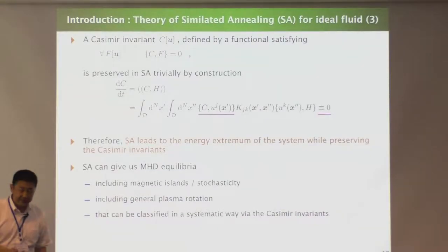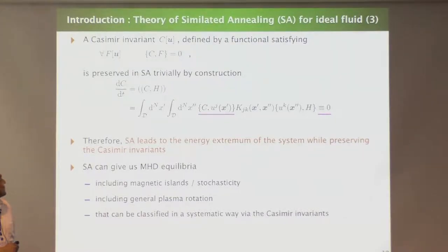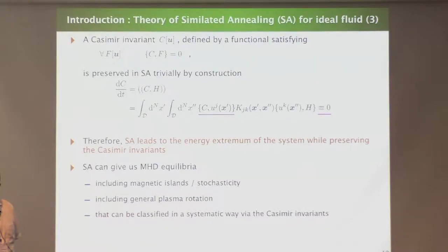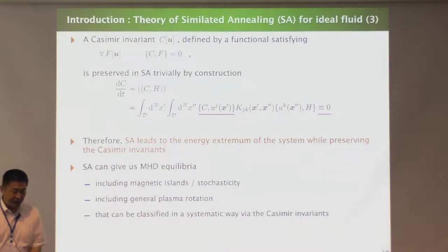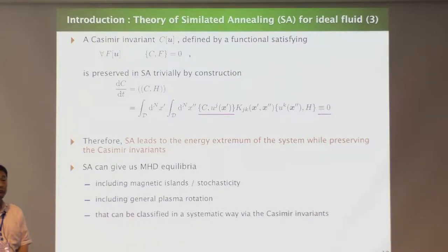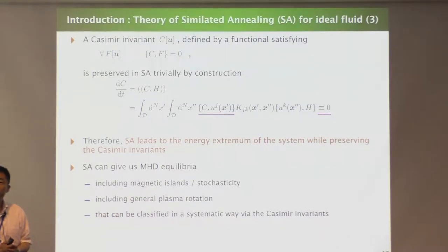How about the Casimir invariants? The time evolution of the Casimir invariant C is shown here. According to the definition of the Casimir invariant, this is trivially zero — meaning the Casimir invariant is preserved even in the artificial dynamics. Therefore, this method can give an equilibrium of ideal fluid while preserving the Casimir invariants, without assuming nested flux surfaces.